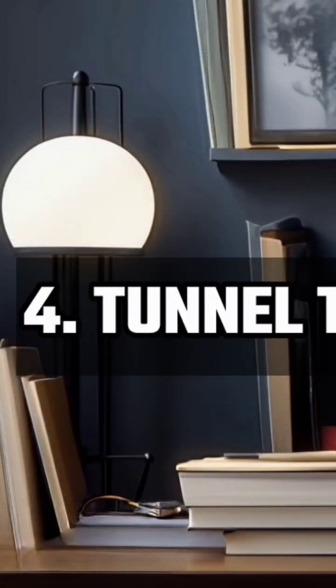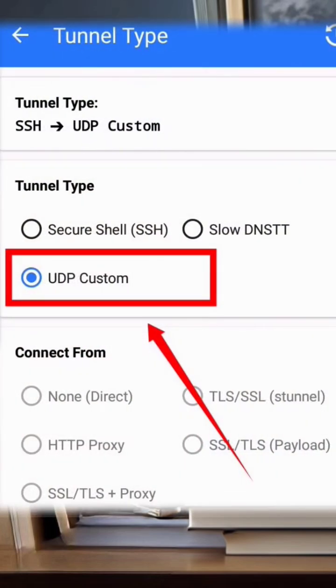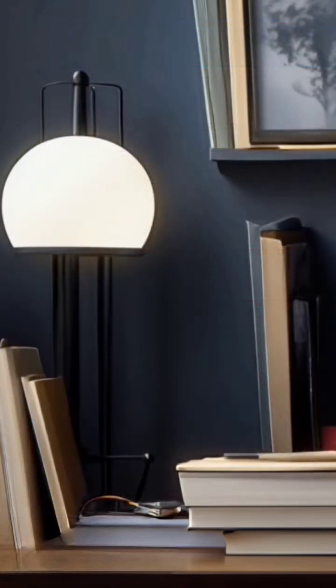Step 4. Select Tunnel Type. In the Tunnel Type section, choose UDP Custom, and then click Save to return to the home screen.